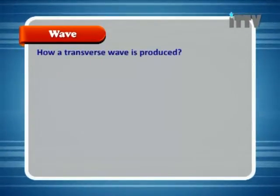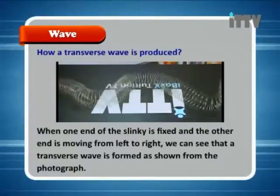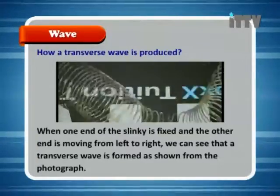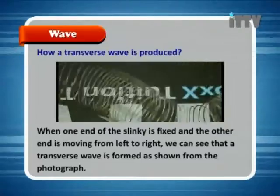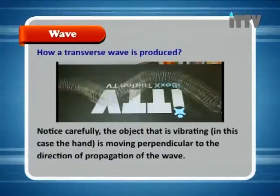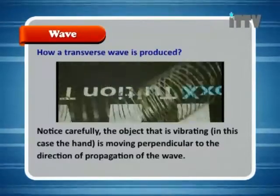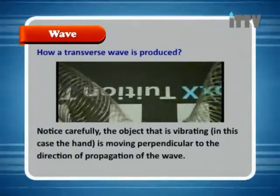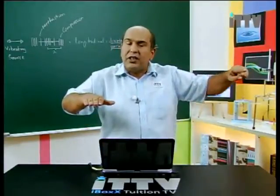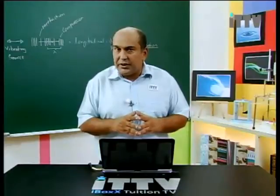How a transverse wave is produced: in the demonstration, the slinky is being moved up and down. As it moves up and down, a pulse of wave travels from left to right. A perpendicular movement of the slinky produces a transverse wave moving away from it. The object that is vibrating — in this case the hand — is moving perpendicular to the direction of propagation of the wave. So in a transverse wave, we vibrate up and down, but the wave moves perpendicular away from the vibrating source — displacement is perpendicular to the direction of propagation.